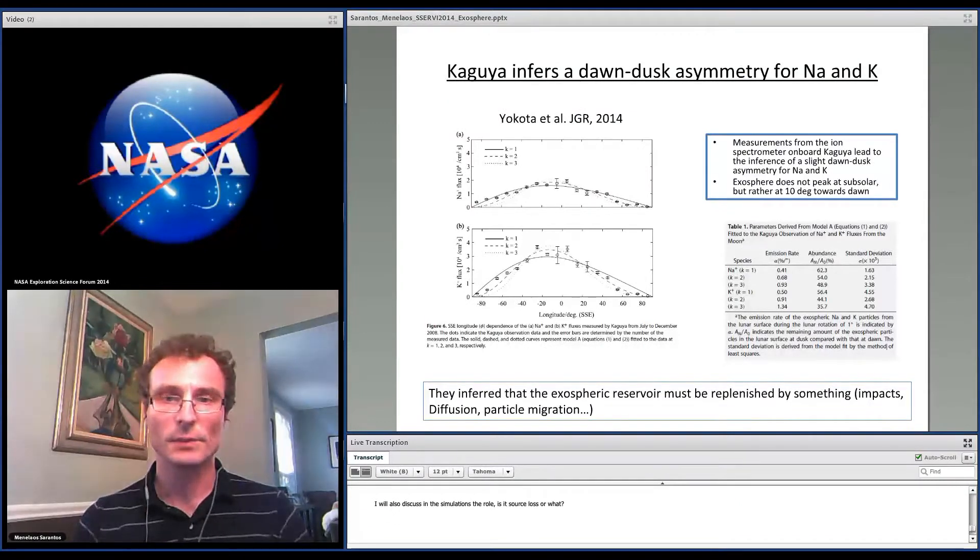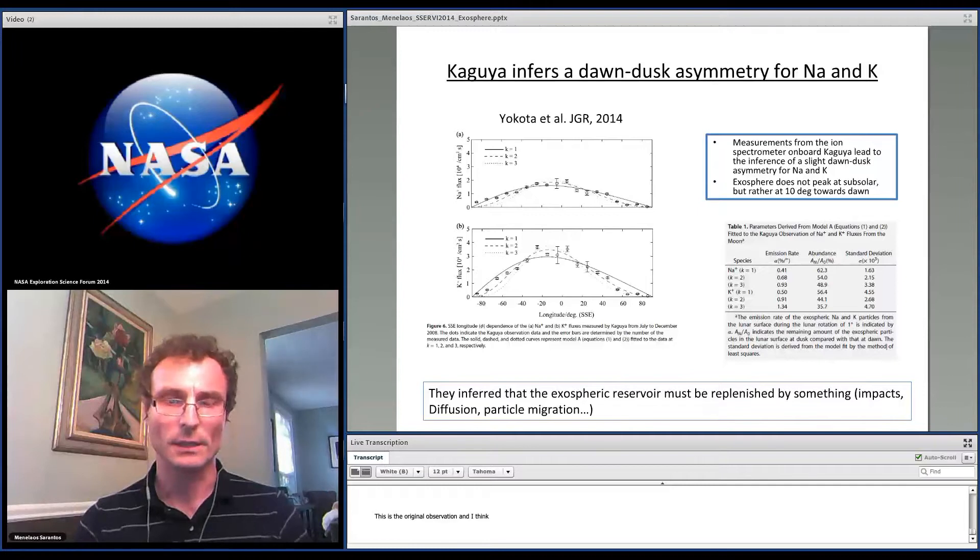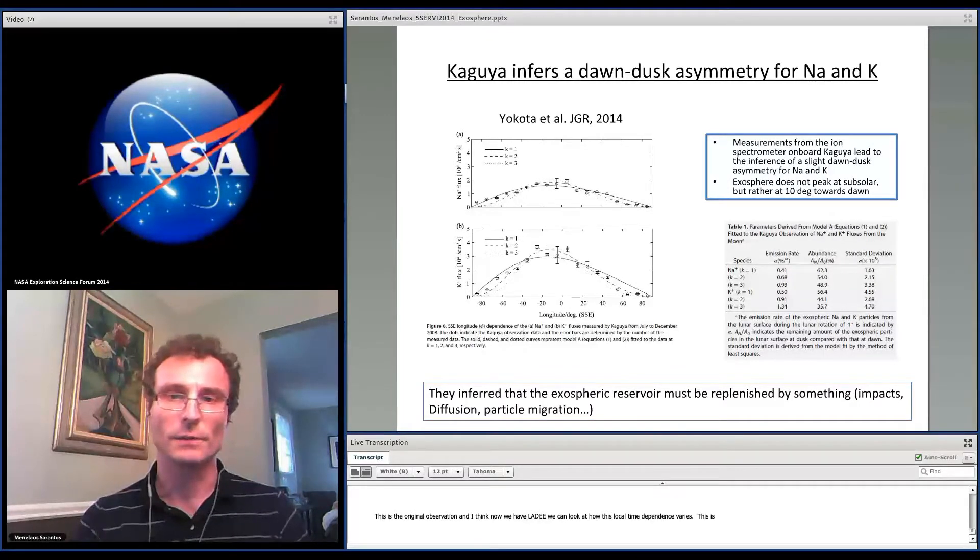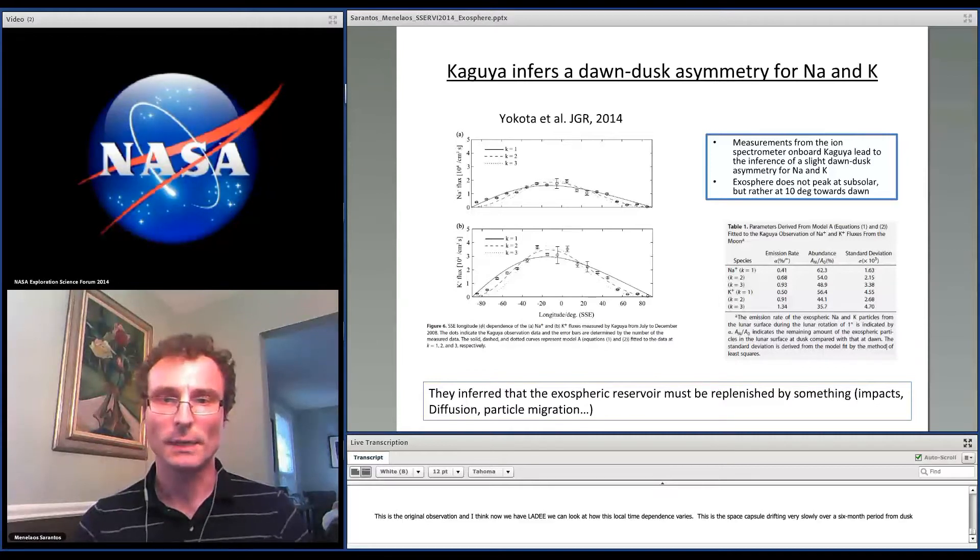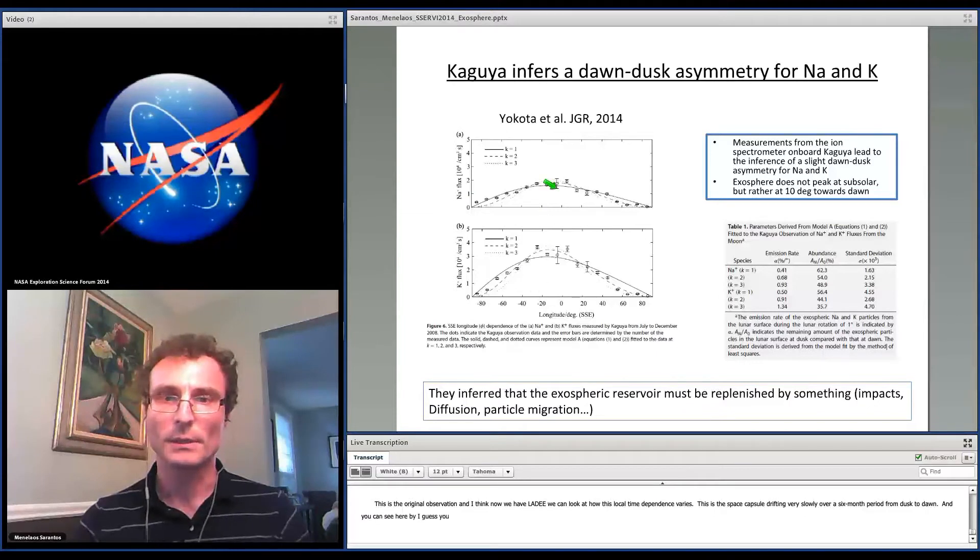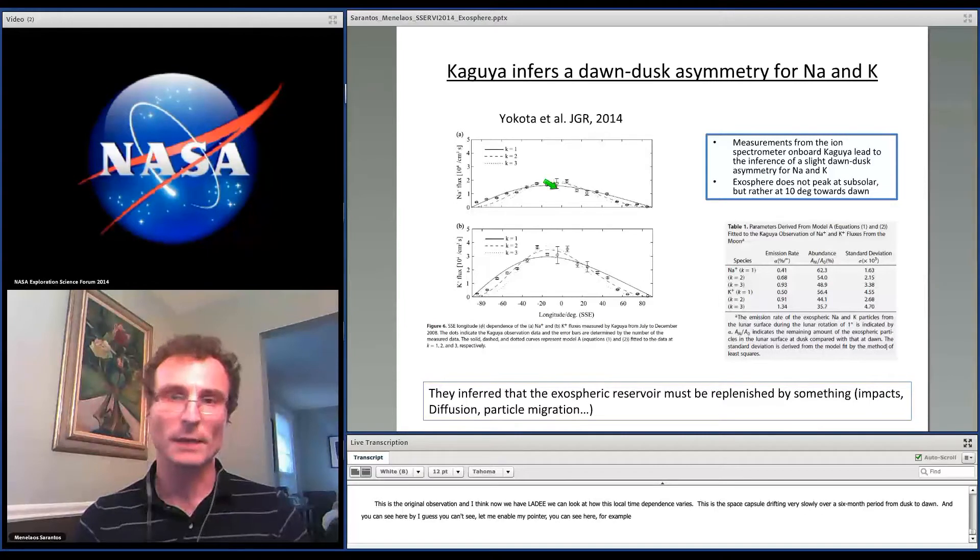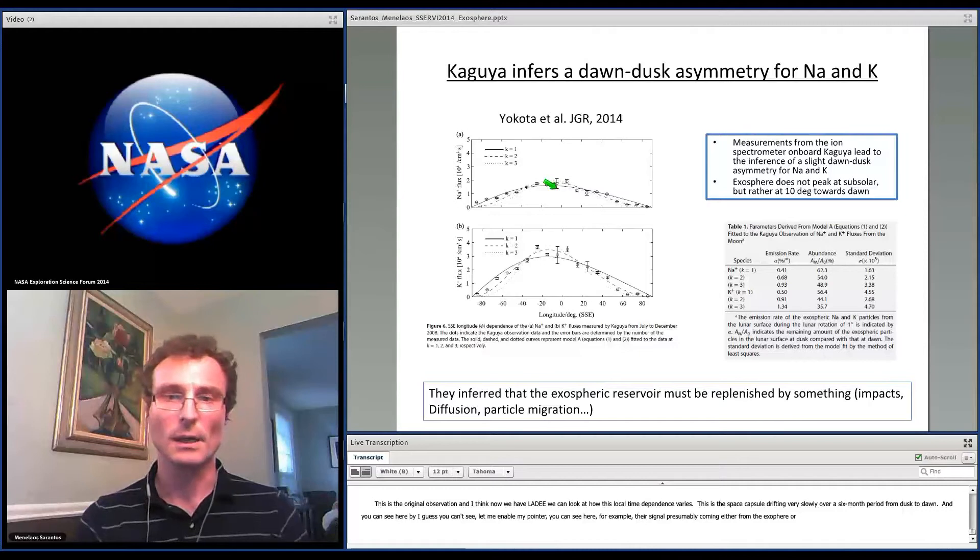This is the original observation, and I think now that we have a lot of data, we can look very carefully at how this local time dependence varies. Essentially, the spacecraft was drifting very slowly over a six-month period from dusk to dawn. And you can see here their signal presumably coming either from the exosphere and/or the surface, which shifted by about 10 degrees towards dawn of the subsolar point.